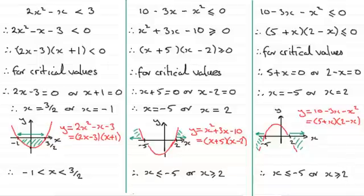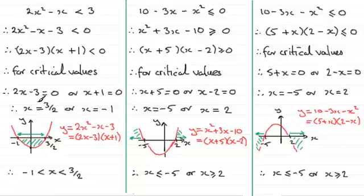Hopefully this has given you an idea of how we go about solving quadratic inequalities. Make sure you rearrange them if they're not already greater than or less than zero — get them into the correct form. Factorise them so you can find the critical values. If they don't factorise, use the quadratic formula. Draw your sketch graph, and from the sketch graph you should be able to see which particular set of values you need.